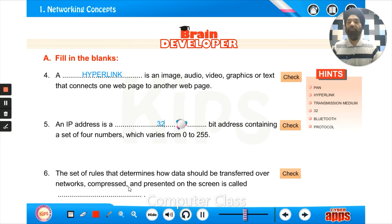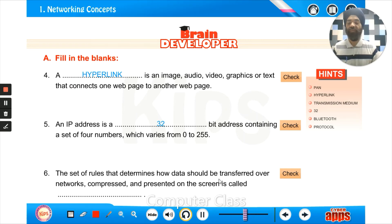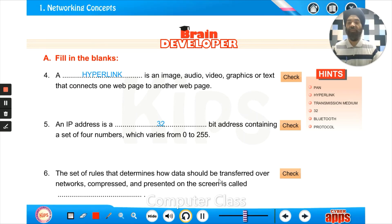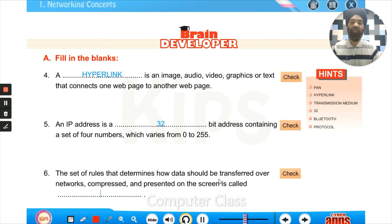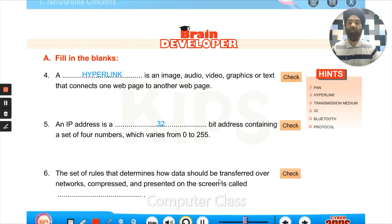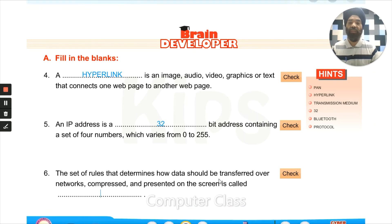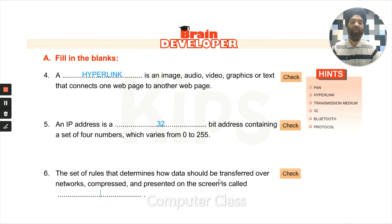Then: the set of rules. Wherever you find "set of rules," it's a direct indication that this is a protocol. Protocols are a set of rules that determine how data should be transferred over the networks, compressed, and presented on the screen. The answer is protocol.